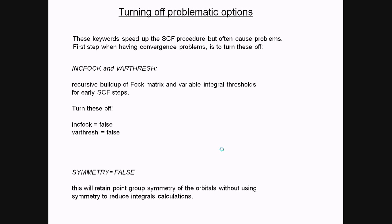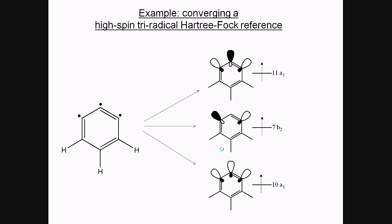Finally, the third factor is turning off some problematic options which are default in SCF calculations. The two main ones are INCFOCK and VARTHRESH. INCFOCK is an incremental buildup of the Fock matrix, and VARTHRESH sets variable integral thresholds at early parts of the calculation. Turn these off using INCFOCK equals FALSE and VARTHRESH equals FALSE. You can also try turning SYMMETRY equals FALSE, which will retain the point group symmetry of the orbitals, but it won't use symmetry to reduce the number of integrals calculated.